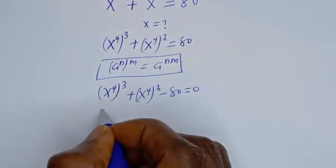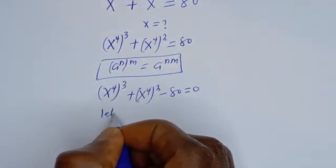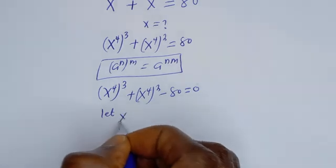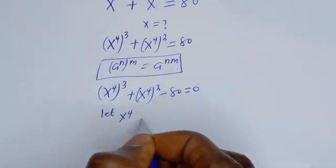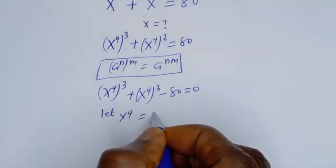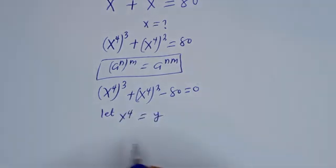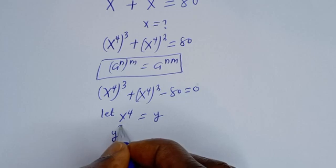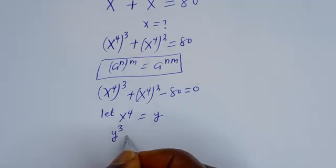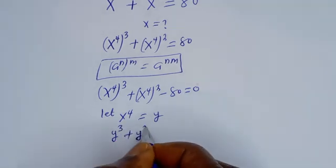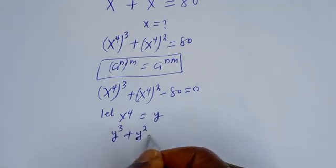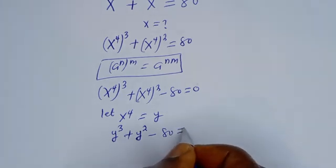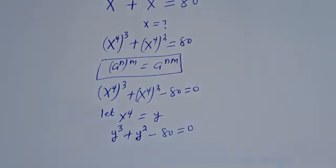Then let S to the power of 4 be equal to Y. Here we have Y raised to the power of 3 plus Y squared minus 80 is equal to 0.